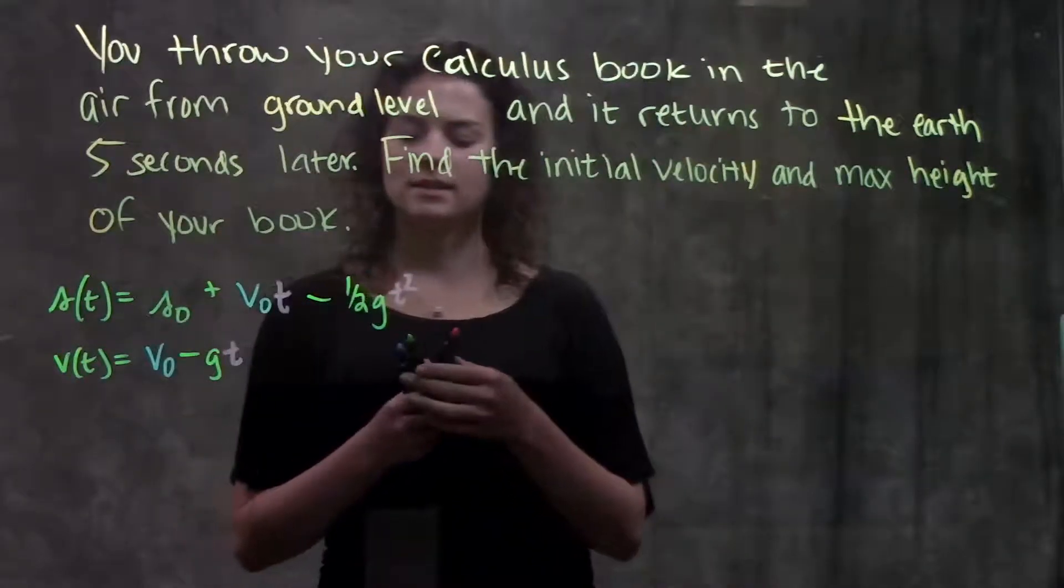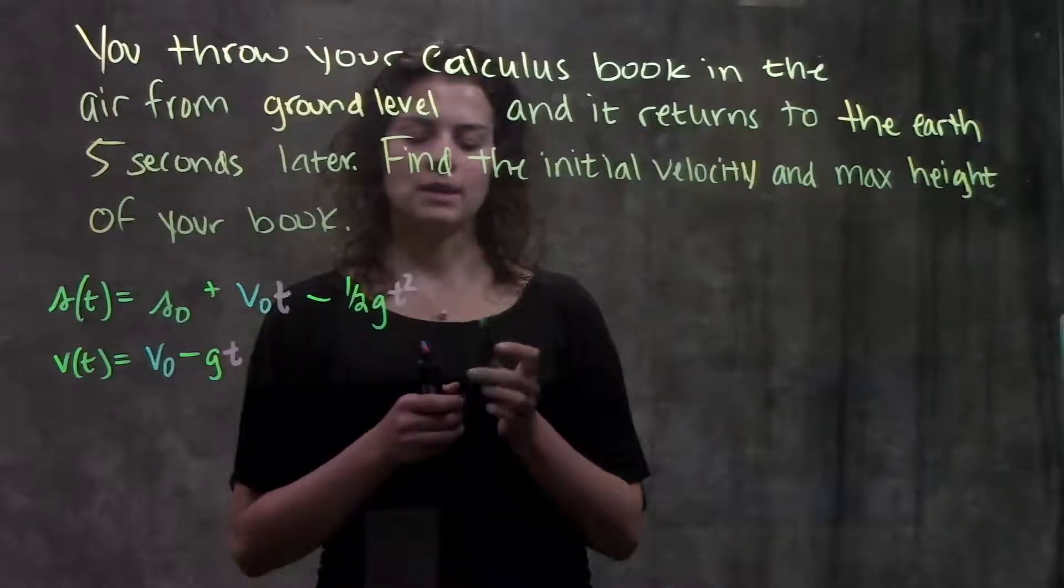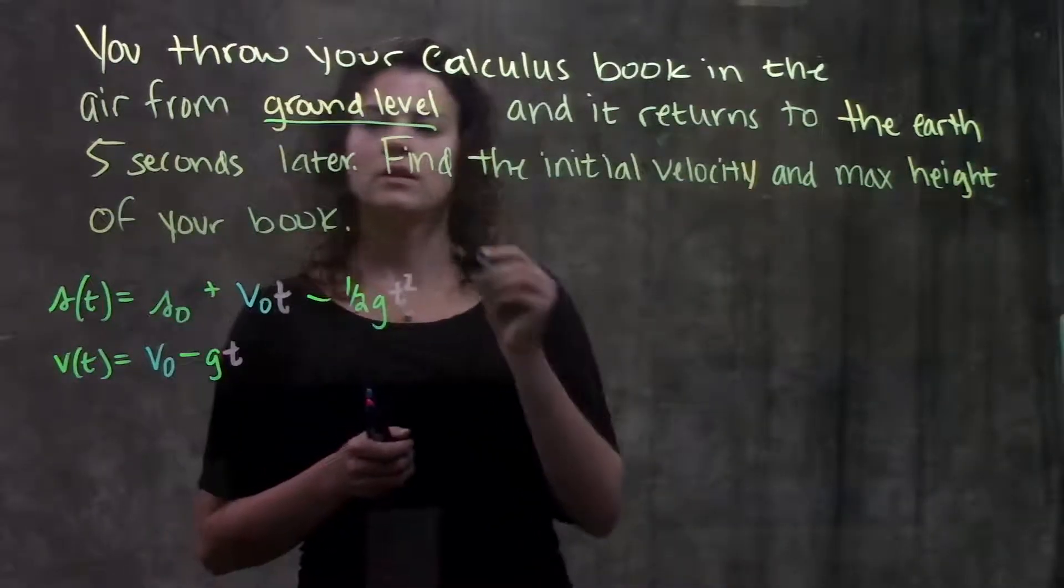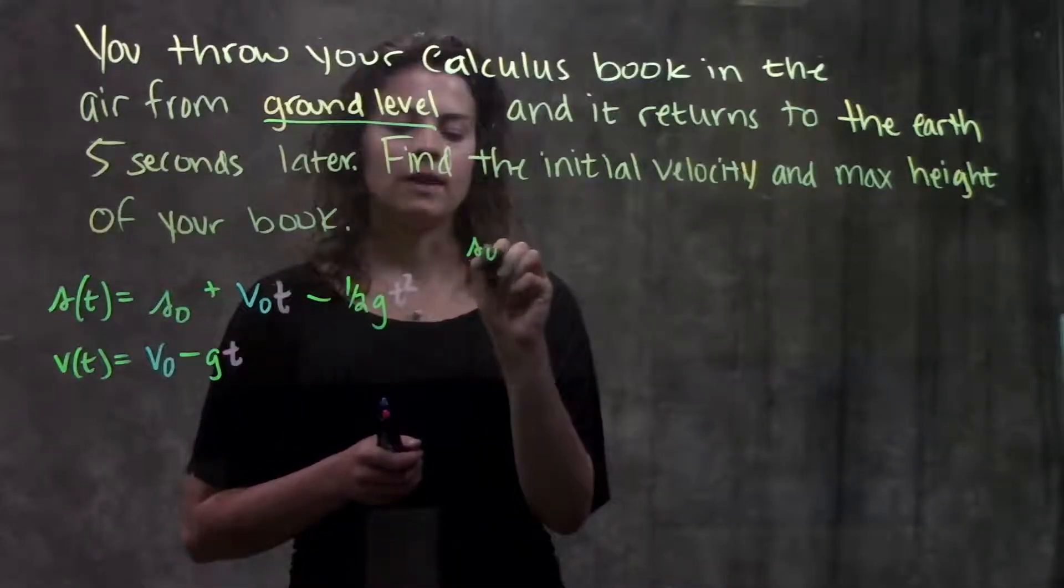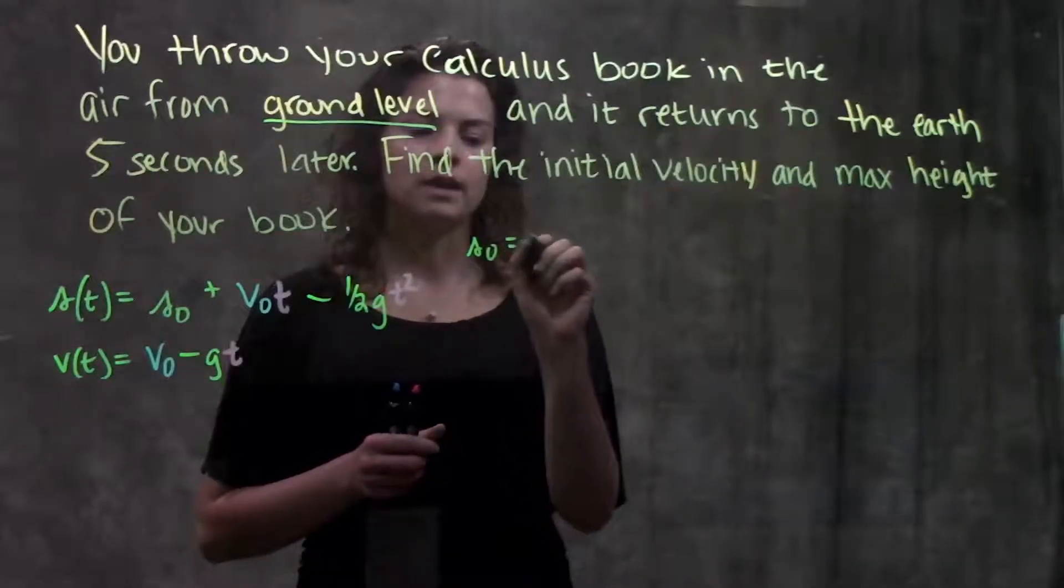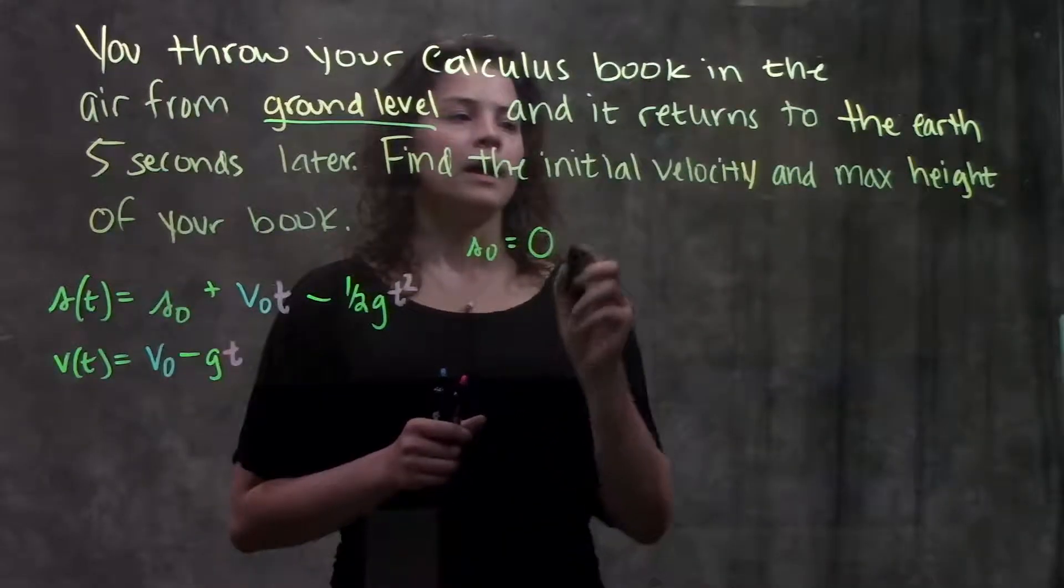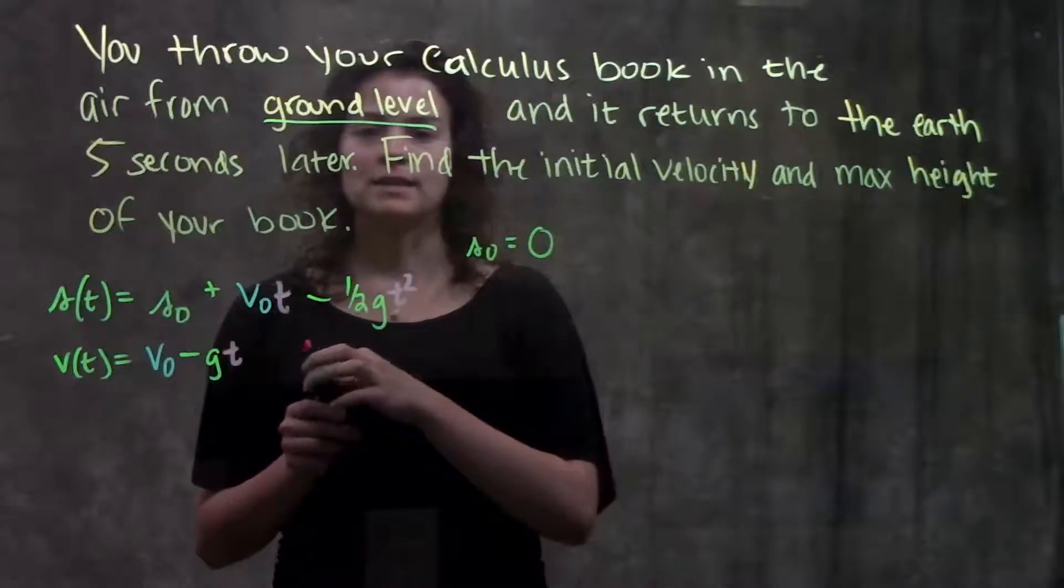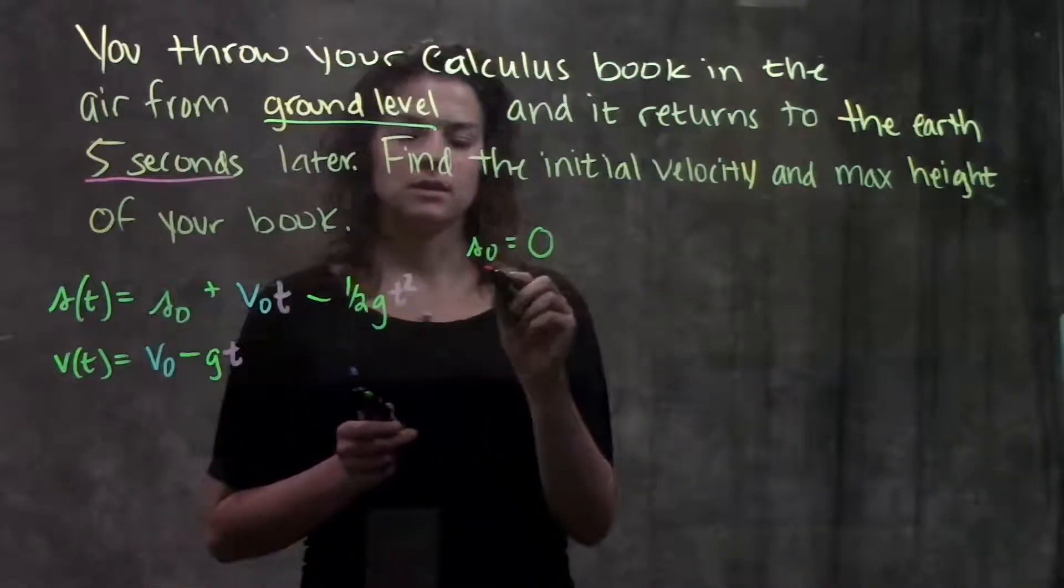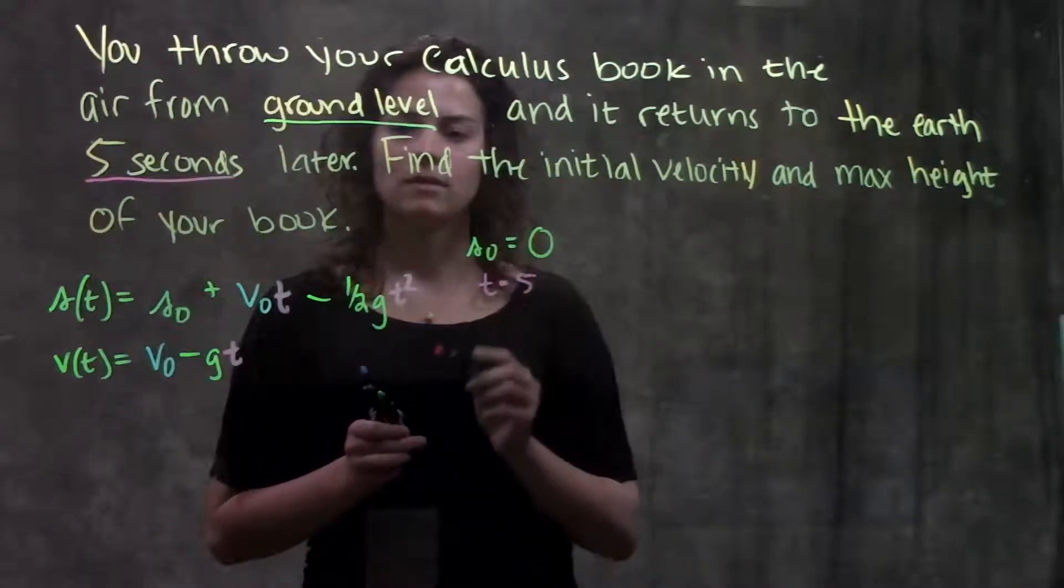Alright so it tells us that we threw our calculus book in the air from ground level. So we threw it from ground level that means our initial position s₀ is zero. And it returns the earth five seconds later. Okay five seconds is our time. Our total time of travel was five seconds.